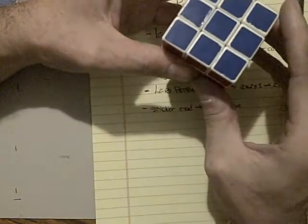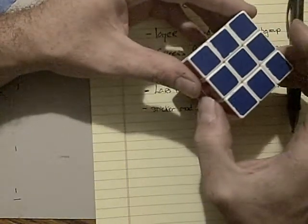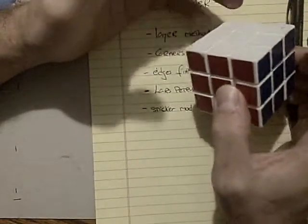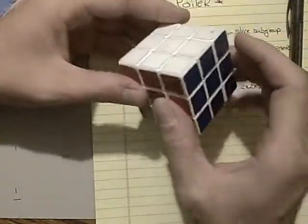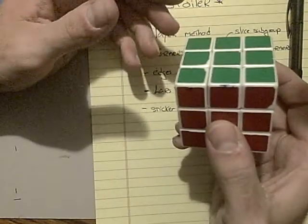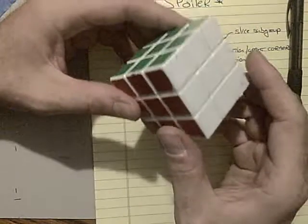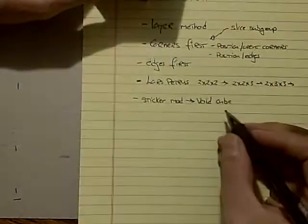If you peel the stickers off the center, you make your own void cube, and it makes the puzzle a little more challenging, and there is something different that can happen at the end of the puzzle when you're solving it that you won't be ready for, having only the solution for the classic Rubik's Cube. So that's a good one.